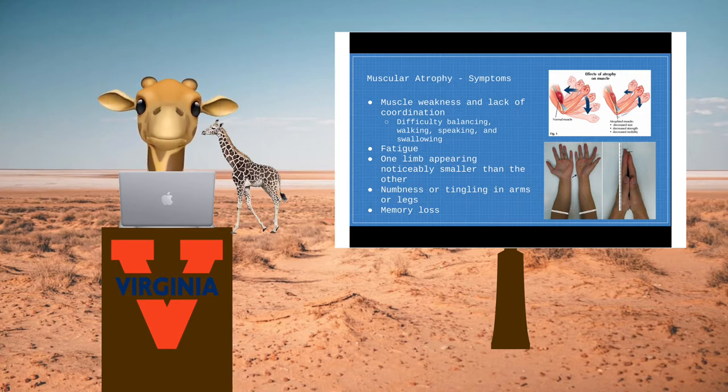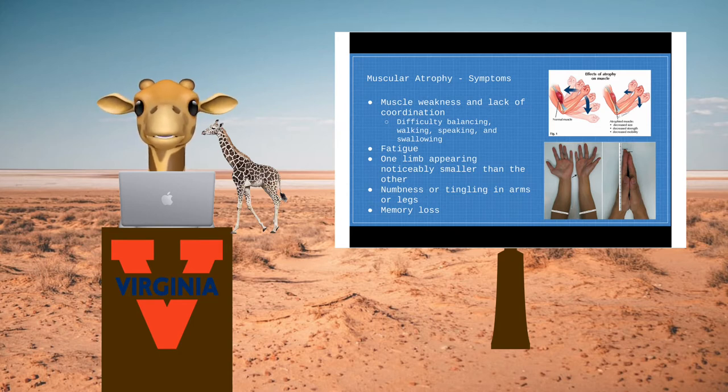A noticeable characteristic of muscular atrophy is that in isolated cases, it can cause one limb to appear significantly smaller than the other, like if you had one leg in a boot and were on crutches for a long time.